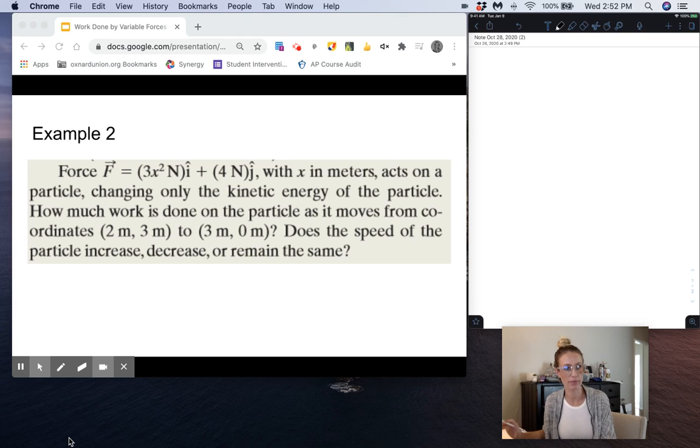All right, so here is our second example of a work problem when we have a variable force. We have force F equals 3x squared newtons i hat plus 4 newtons j hat with x in meters acting on a particle, changing only the kinetic energy of the particle.